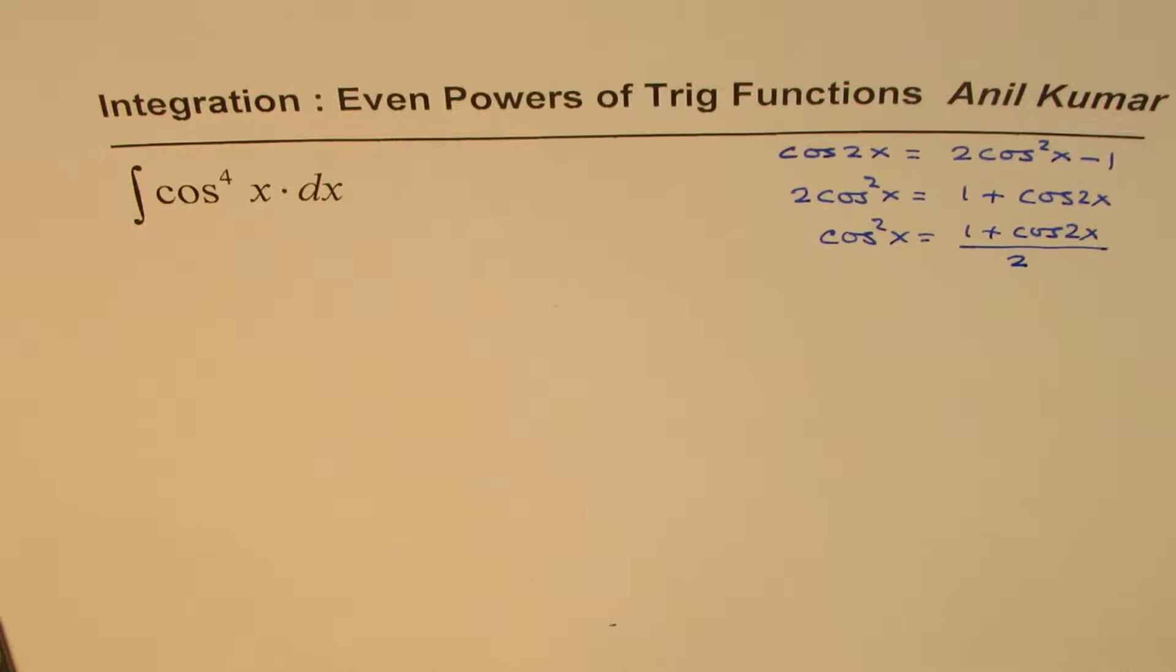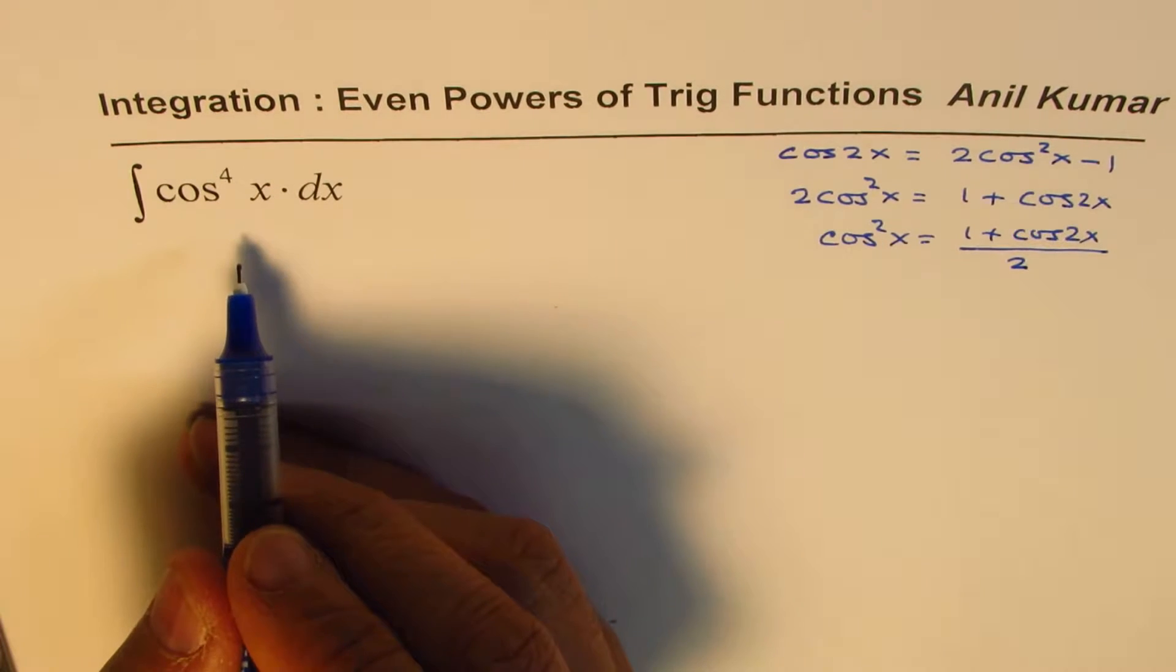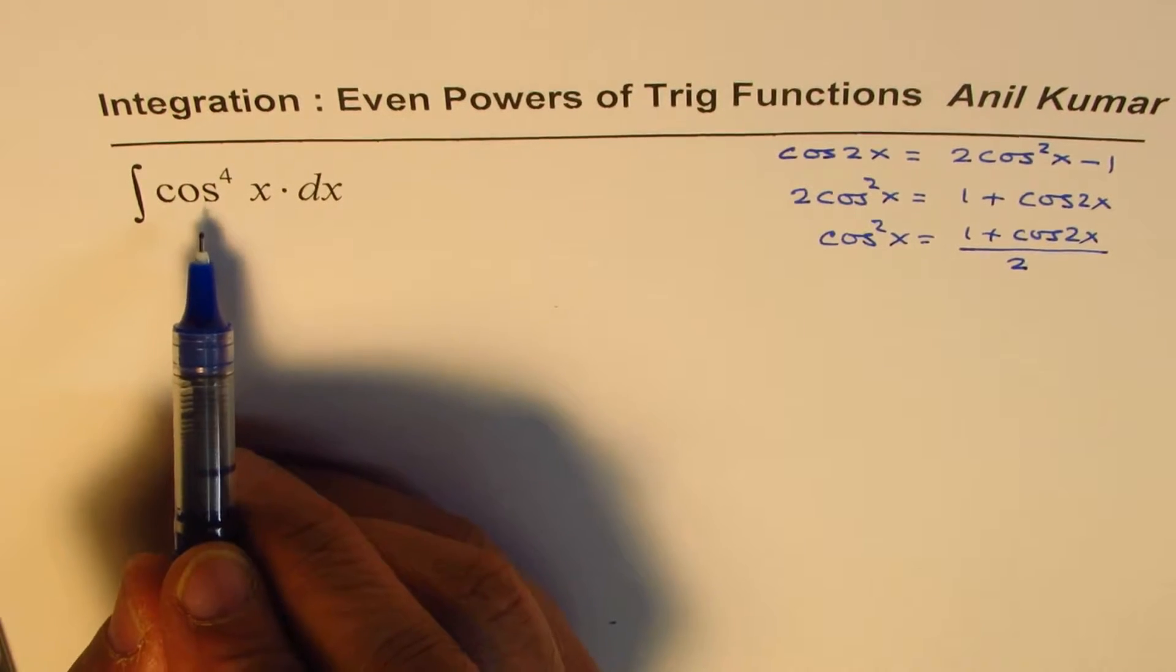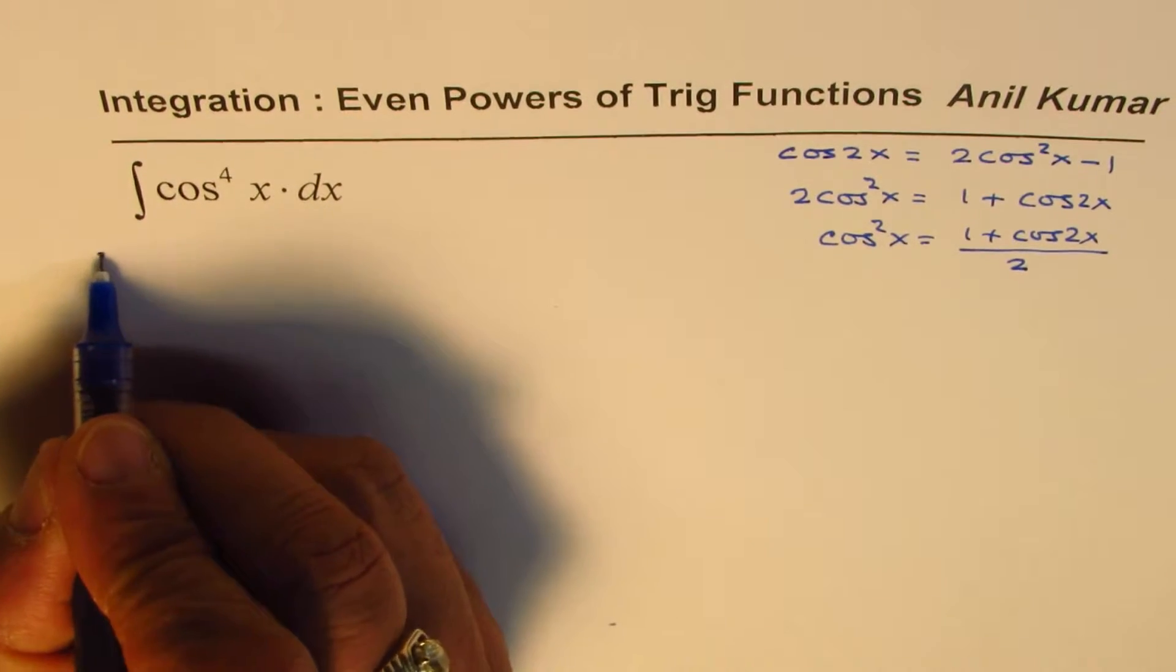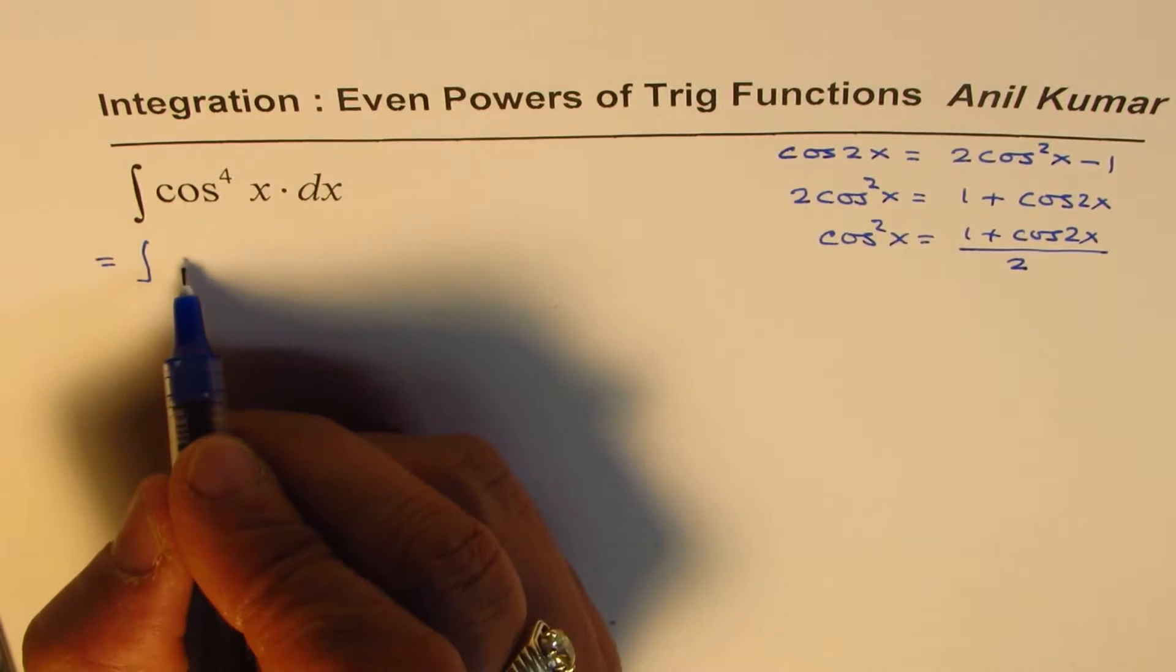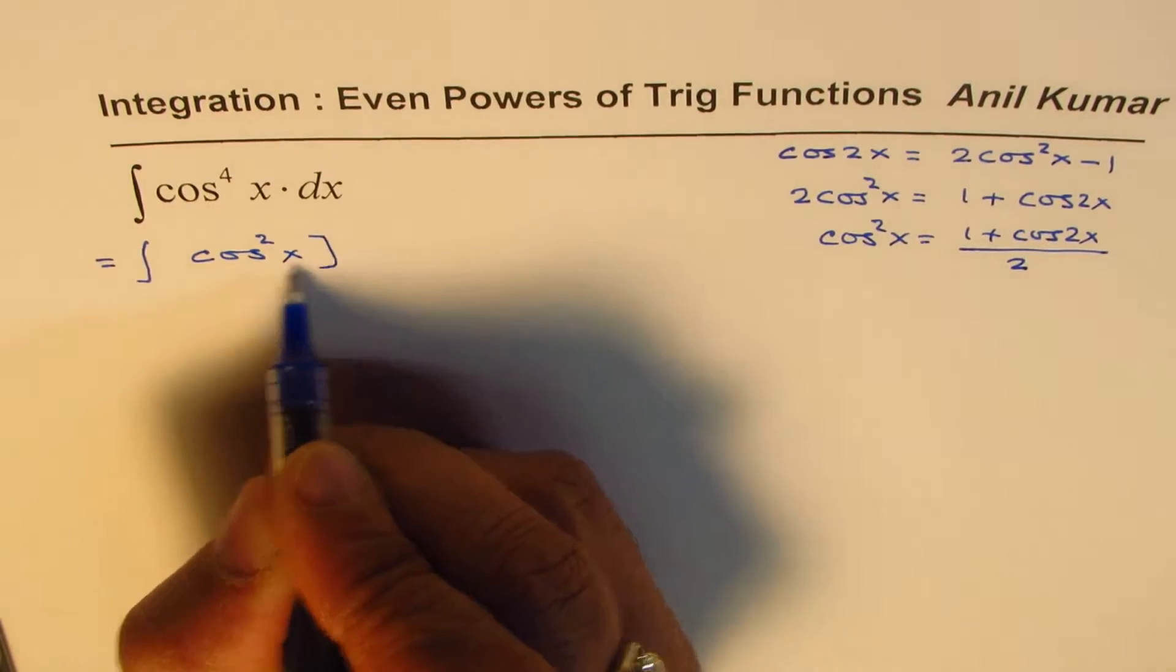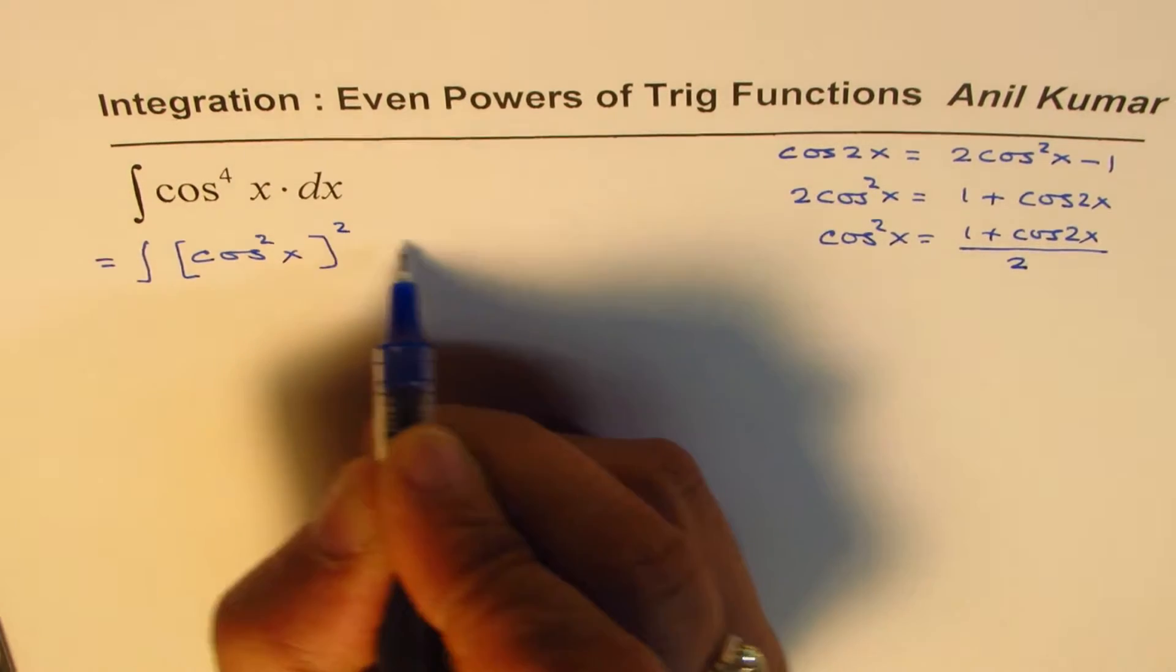This formula helps simplify and integrate trigonometric functions with even powers. We can write this as the integral of (cos²x)² dx.